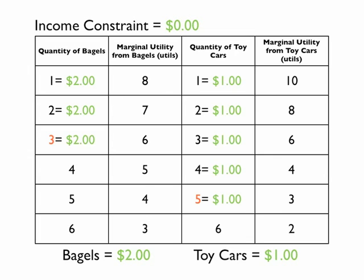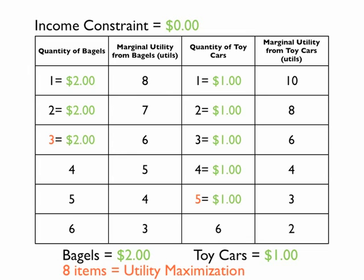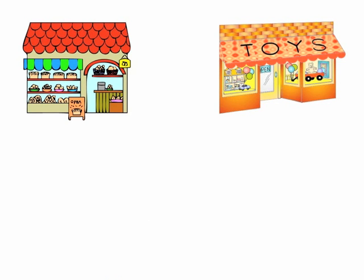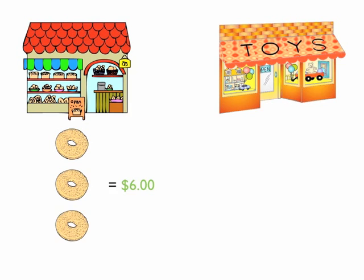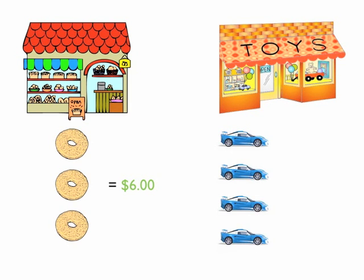You purchased a total of three bagels and five toy cars with that $11 — a total of eight items. You purchased three bagels at $6 and five toy cars at $5. Eight items equals utility maximization, and you maximized your utility.